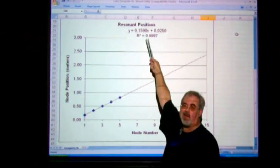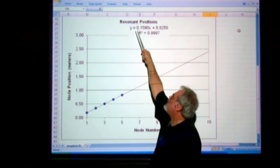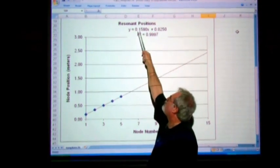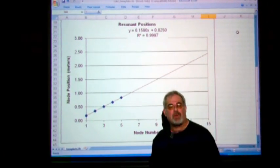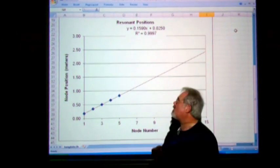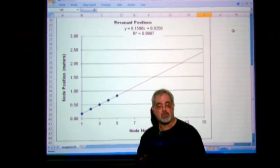You can see what a beautifully straight line this is. An R-squared of 0.9997 is almost perfect. The equation here is telling you the slope and the intercept of the line. The slope, 0.159, is the measurement of half a wavelength in meters. So if we double that, we'd get close to 0.3, or about 30 centimeters.